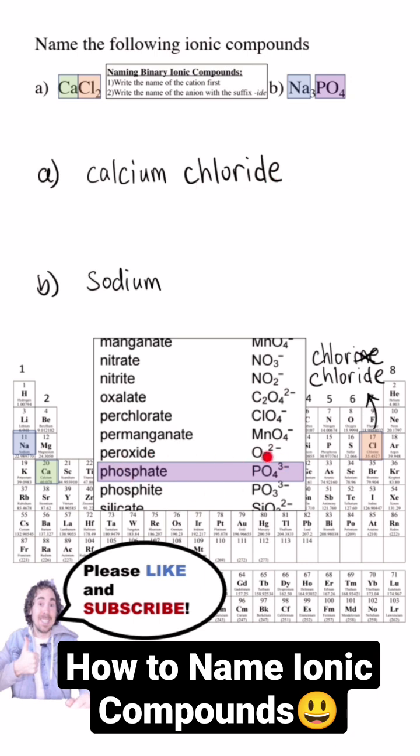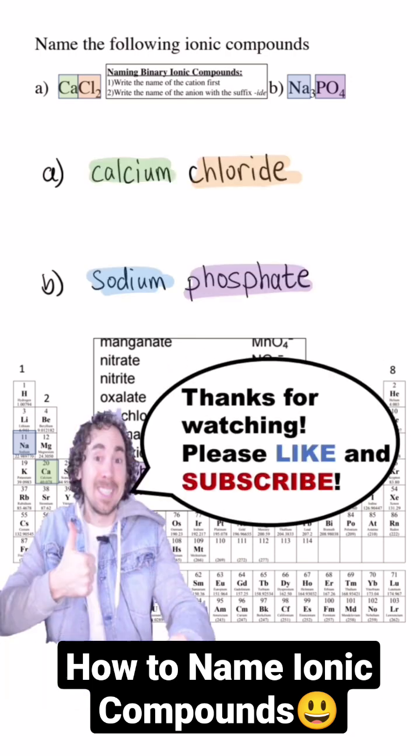Then there are polyatomic ions. Those are ions that are made up of more than one atom. They get a special name and they're listed in tables like this, and so this compound is sodium phosphate.